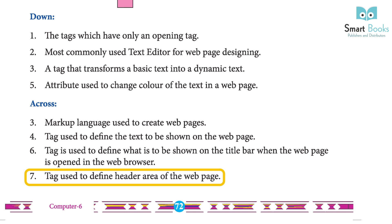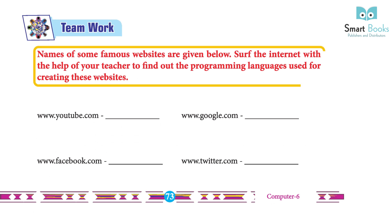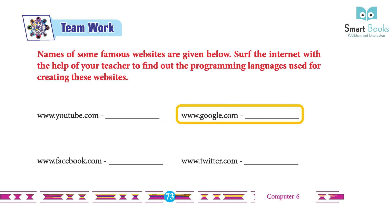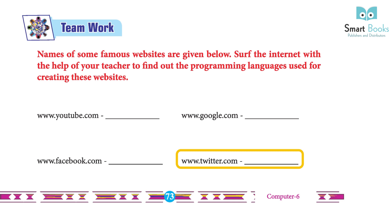Teamwork: Names of some famous websites are given. Search the internet with the help of your teacher to find out the programming language used for creating these websites. 1. www.youtube.com – Answer: C++. 2. www.google.com – Answer: PHP. 3. www.facebook.com – Answer: Python. 4. www.twitter.com – Answer: Java.